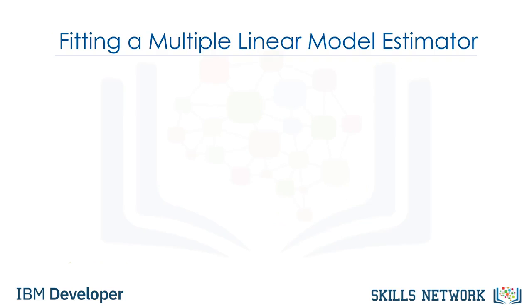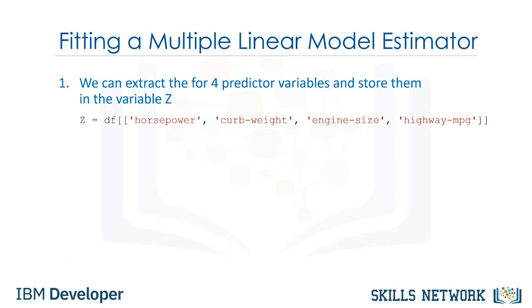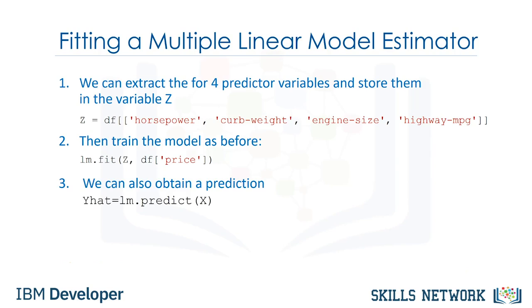We can fit the multiple linear regression as follows. We can extract the four predictor variables and store them in the variable z, then train the model as before using the method train, with the features or dependent variables and the targets. We can also obtain a prediction using the method predict.